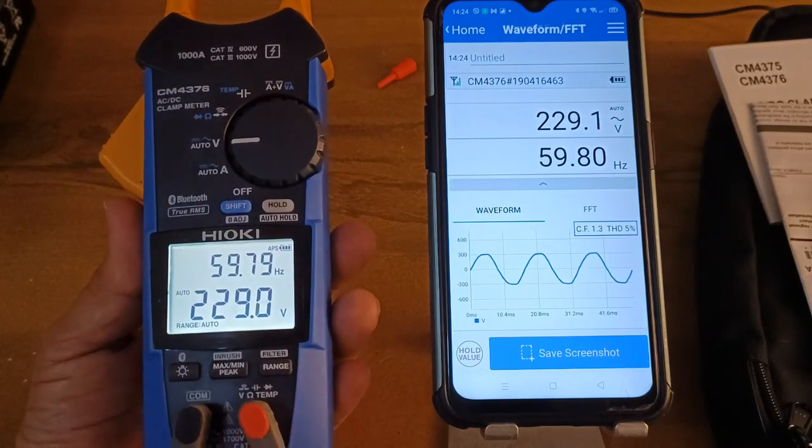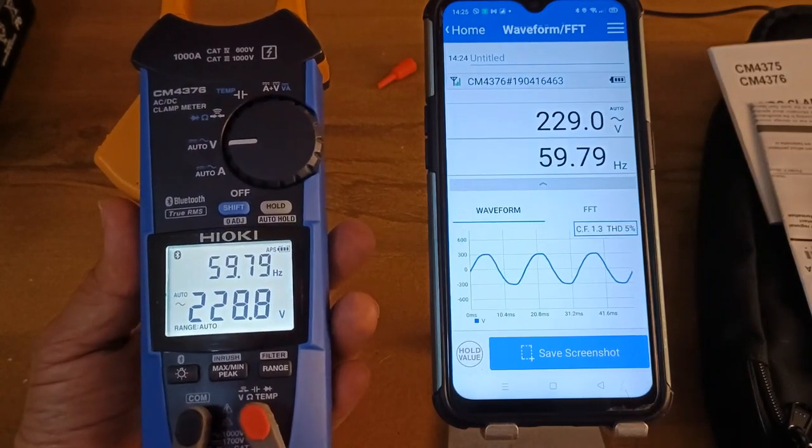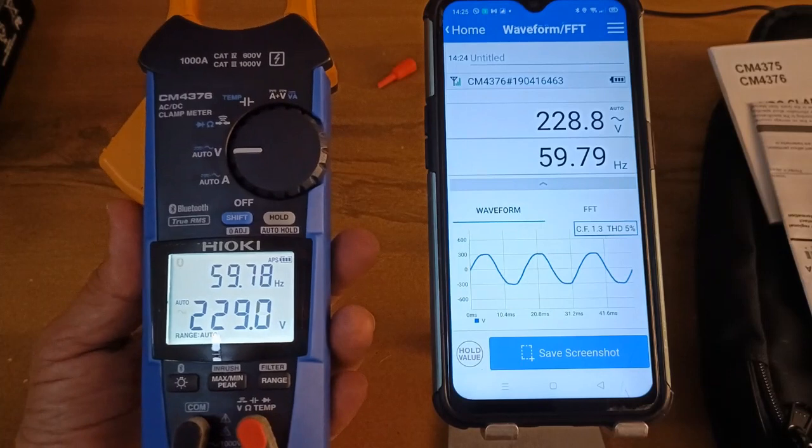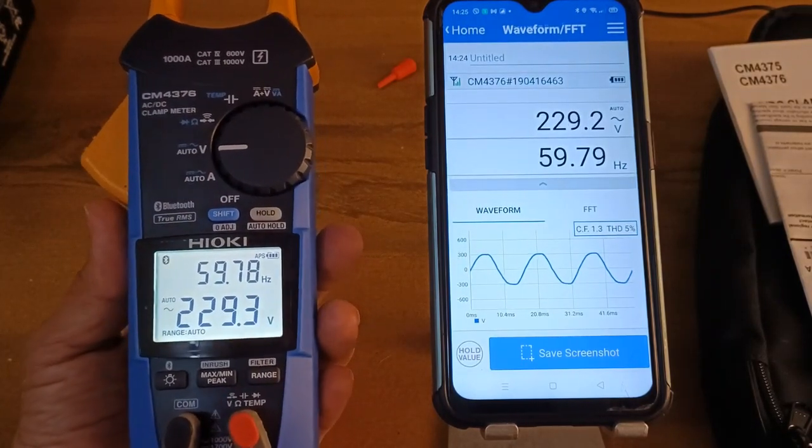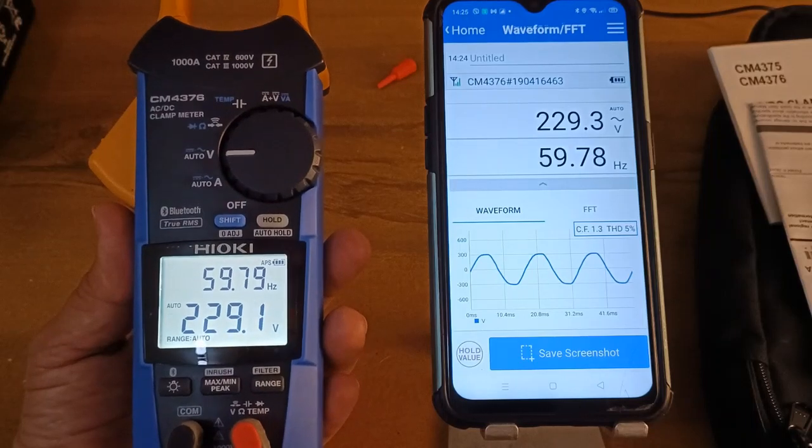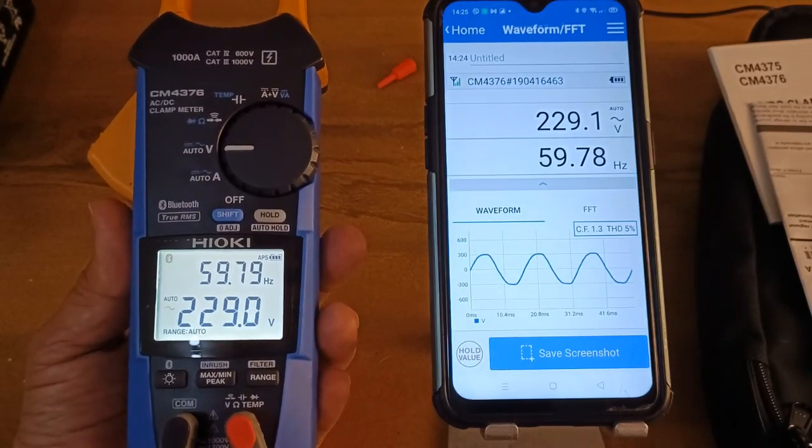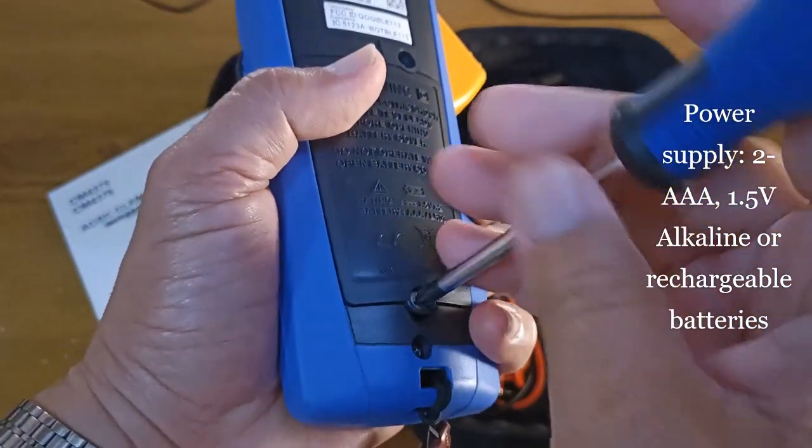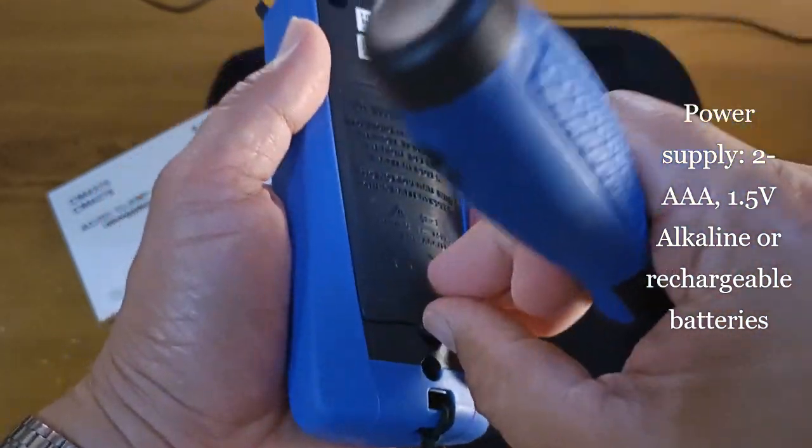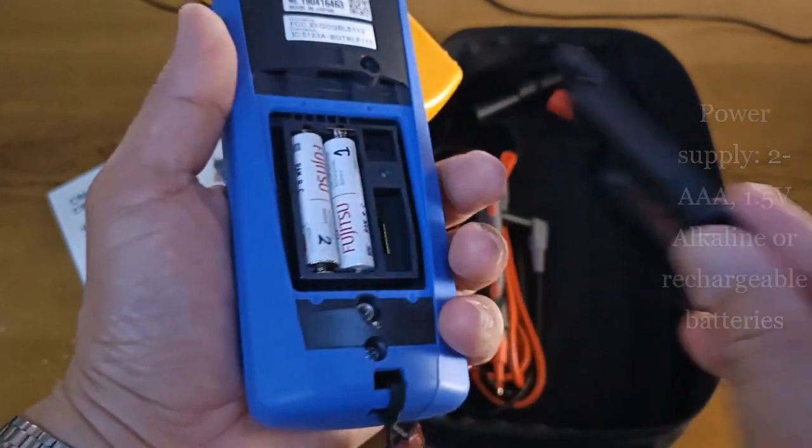The Hioki Genect Cross App therefore really expands the functionality of the compatible equipment, because now we can view graphically the data, we can save it, we can analyze and process it, and we can even make reports about it, and then share it.